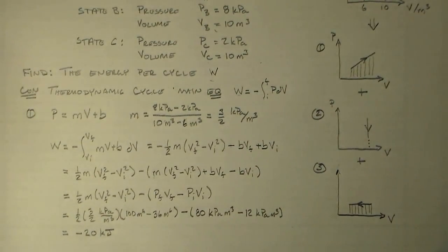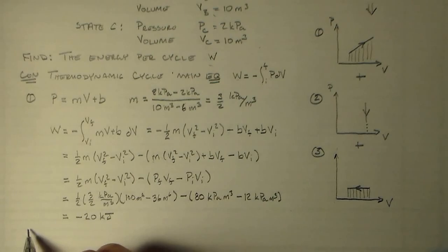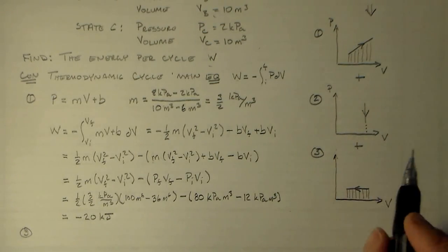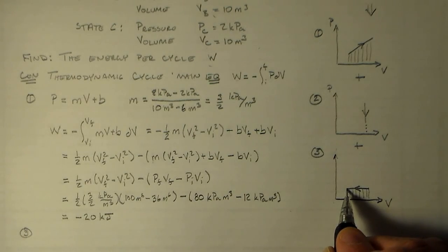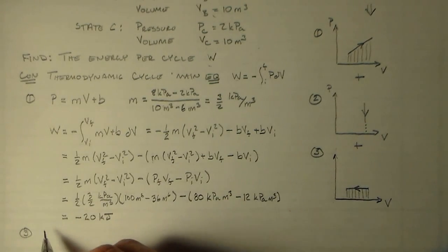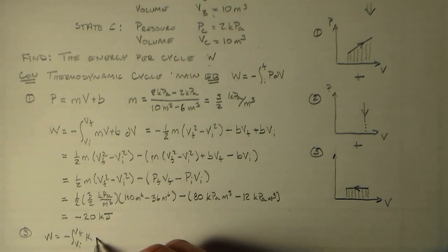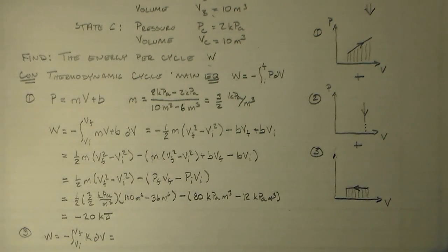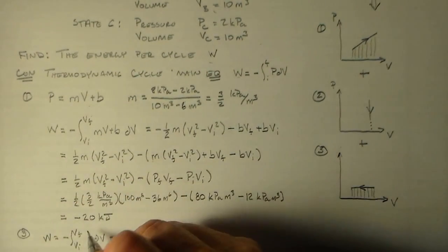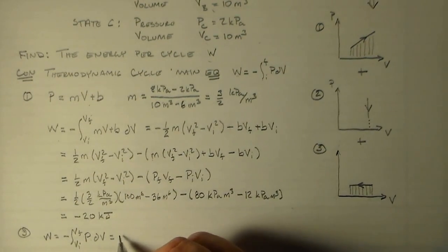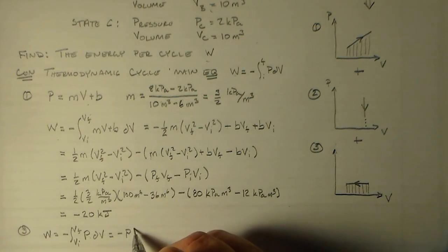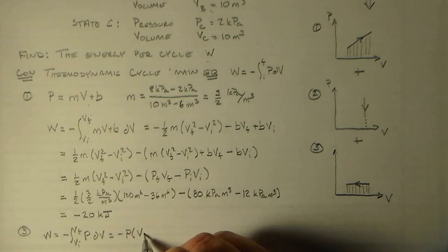So for process two it's equal to zero, and for process three, we have the integral from here to here. W is equal to the integral from VI to VF of some constant pressure DV. So we have minus this constant pressure times VF minus VI.